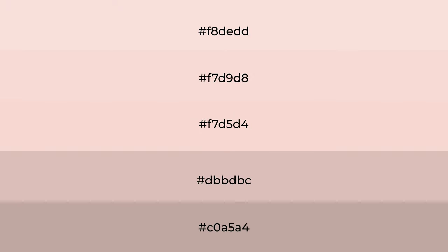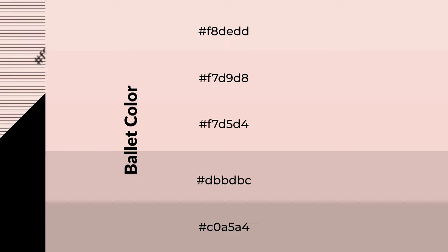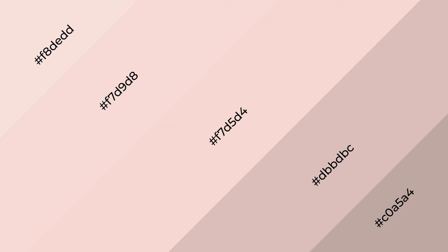To generate shades of a color, we add black to the color. It is used in patterns and 3D effects. Layers and shades create depth and drama. Ballet is a warm color and it emits cozier and active emotions.